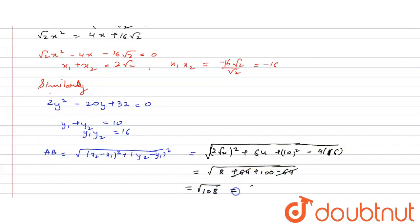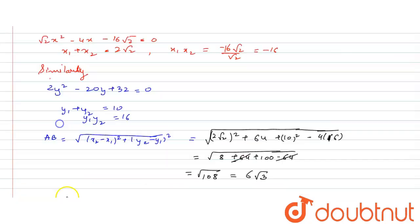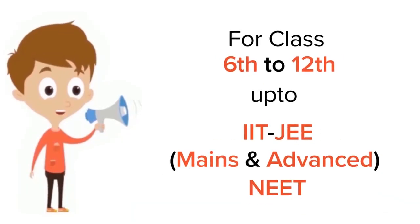This will get cancelled out and we will have √108 and that is equal to 6√3. So the answer to your question is 6√3. So the correct option is option number 3. Option 3 is correct.